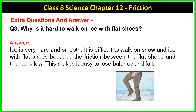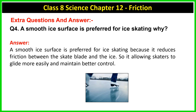Question 3: Why is it hard to walk on ice with flat shoes? Ice is very hard and smooth. It is difficult to walk on ice with flat shoes because the friction between flat shoes and ice is very low, making us lose balance and fall. Question 4: Why is a smooth ice surface preferred for ice skating? A smooth ice surface is preferred for ice skating because it reduces friction between the skate blade and the ice, allowing skaters to glide more easily and maintain better control.